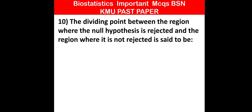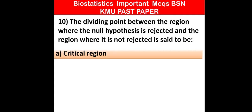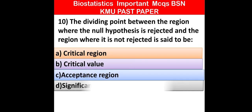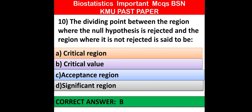MCQ number 10: The division point between the region where the null hypothesis is rejected and the region where it is not rejected is said to be — critical region, critical value, acceptance region, or significant region. Option B is correct: critical value, because the null hypothesis is rejected in the region.